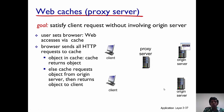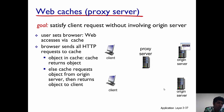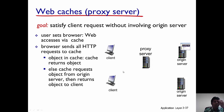Now we'll move on to web caches and how they improve performance. The goal is to satisfy a client's request without actually going to the origin server. There is something called a proxy server which caches information. The reason you don't want to go to the origin server is that it may be located far from you, and you also want to reduce load on the internet to get better throughput and delay, getting information as close to you as possible.